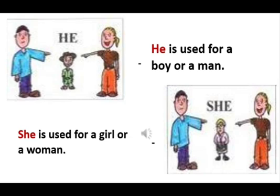'She' is used for a girl or a woman. For example, Ginny is a beautiful girl. Ginny is my friend. Ginny is a good dancer. So instead of repeating Ginny again and again, I will say: Ginny is a beautiful girl. She is my friend. She is a good dancer.